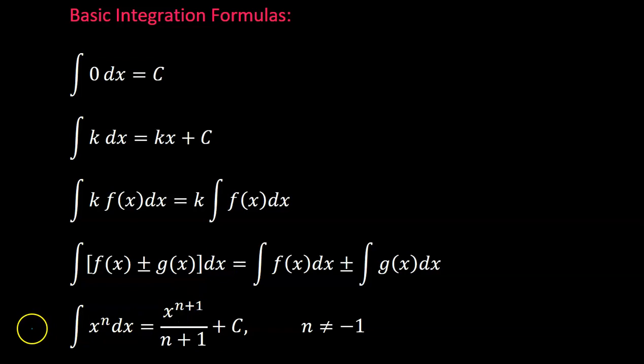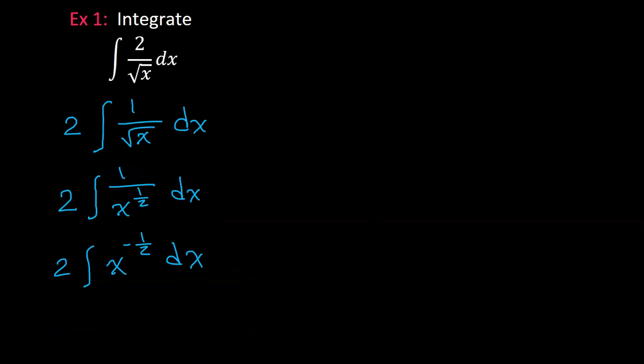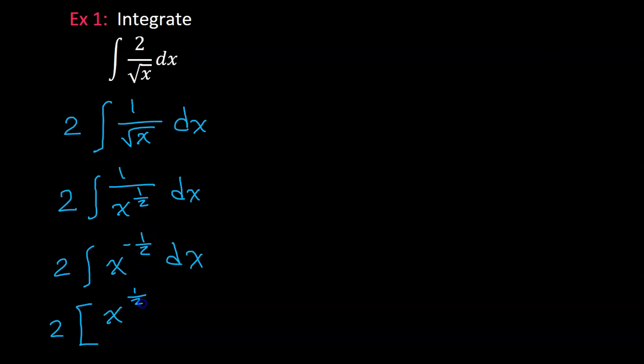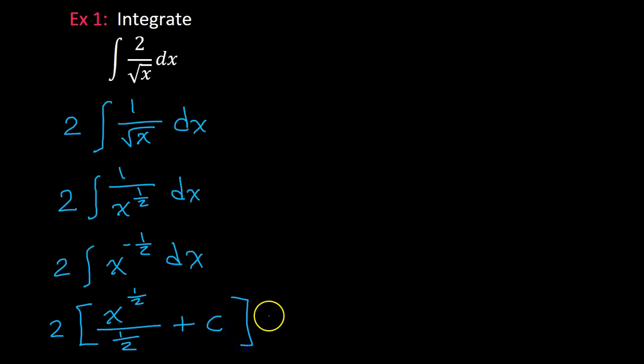This rule is the one that gets used most often. If we have x to the n power, to find the anti-derivative we increase the exponent by 1 and then divide by that new exponent. So we bring down the 2, increase the exponent by 1 giving us x to the 1/2 power, and divide by that new exponent. Let's not forget the constant of integration — that will always appear when you integrate.